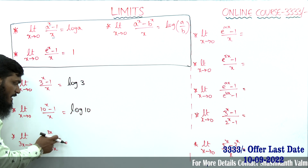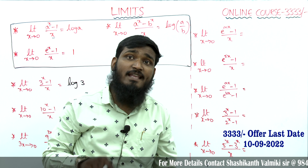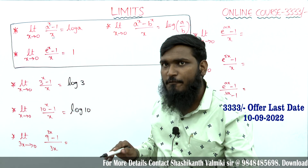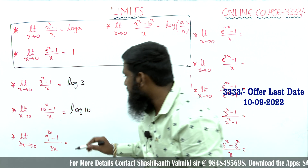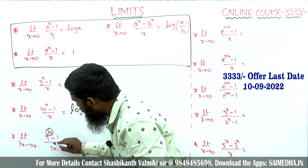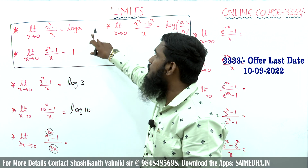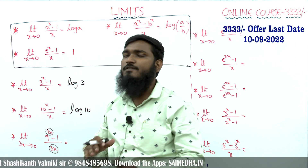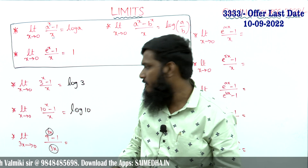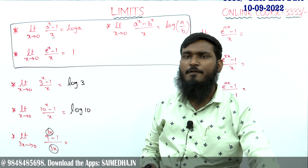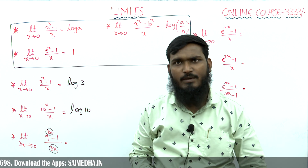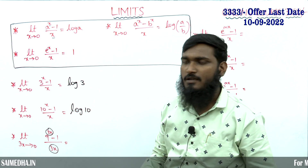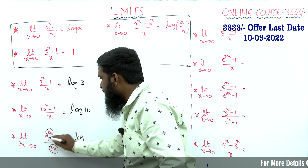Next: limit 3x tends to 0, 9^(3x) minus 1 divided by 3x. Listen carefully — if instead of plain x you have some other function, such as 3x, sin x, tan x, or x², as long as that same function appears in both the power and the denominator, you can still apply the same TSR. Here the function is 3x, so the answer is log 9.